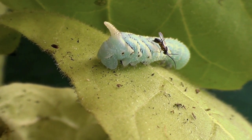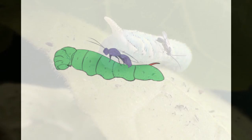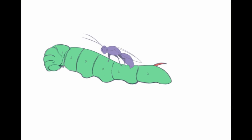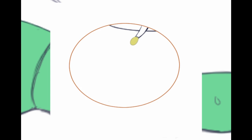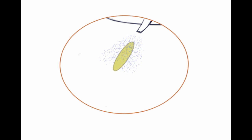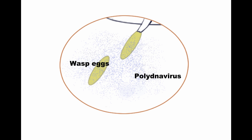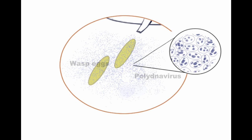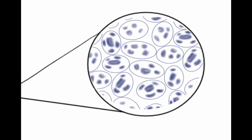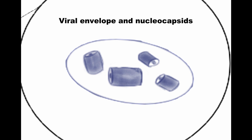Parasitoids must protect their eggs against the host immune system. Many braconids do this by injecting a symbiotic polydnavirus during oviposition. This virus has co-evolved with braconids for about a hundred million years and is integrated into the wasp genome. Upon entering the host, it does not replicate, but instead uses the host's own cellular machinery to produce gene products that interfere with the immune and endocrine systems.